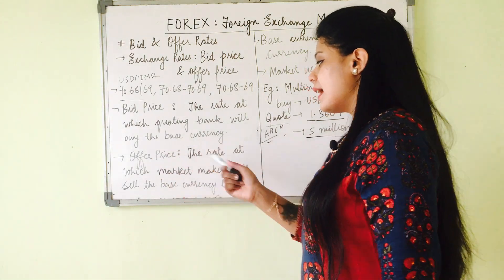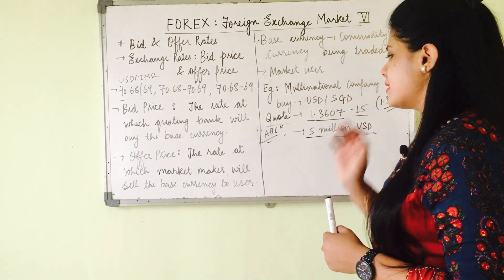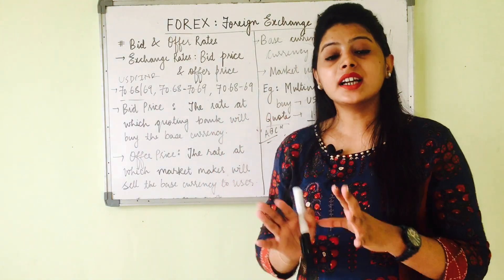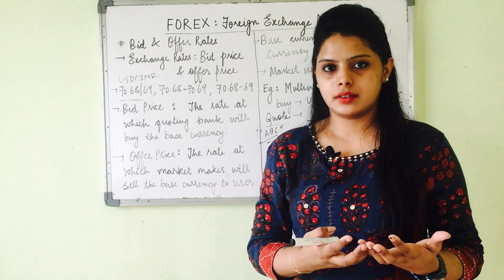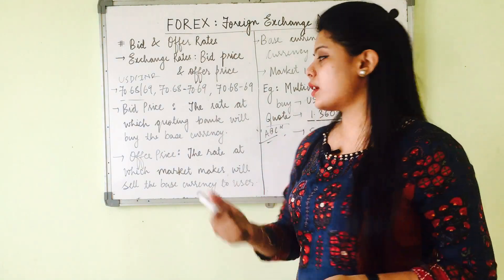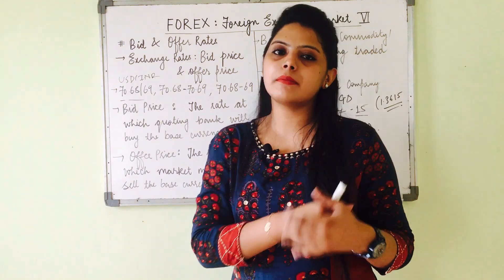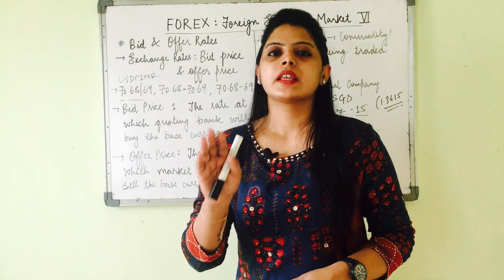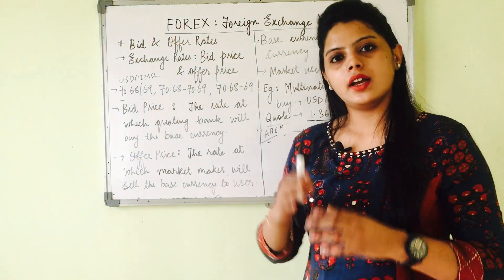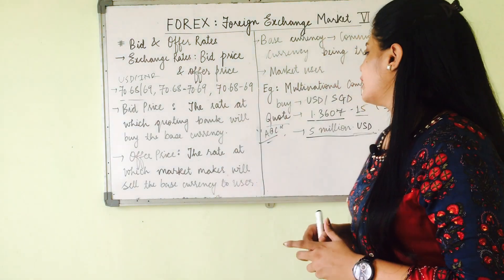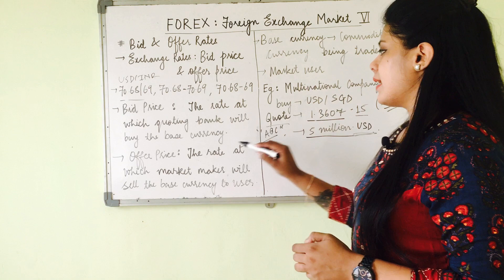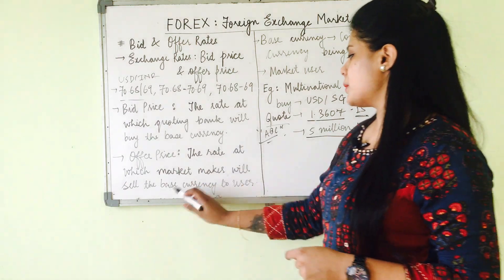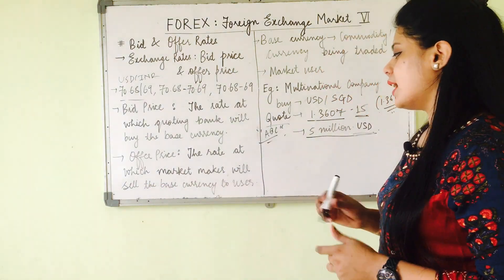Now what is offer price? The offer price is the rate at which the market maker will sell the base currency to the user. What is a market maker? For example, when a dealer calls any bank for its rate or its quote, the dealer becomes the market maker. Whereas when the dealer calls another bank to close the deal, it is termed as the market user. So in this case, the offer price is 1.3615.